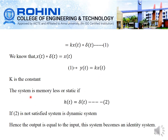The system is memoryless or static if h(t) equals delta(t). If this condition is not satisfied, then the system is a dynamic system. When k equals 1, the output equals the input, and this system becomes an identity system.